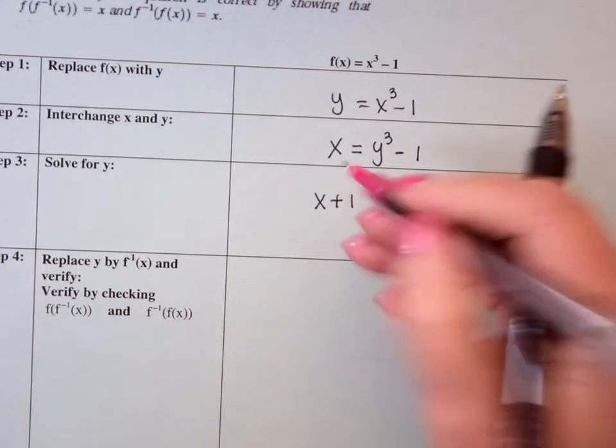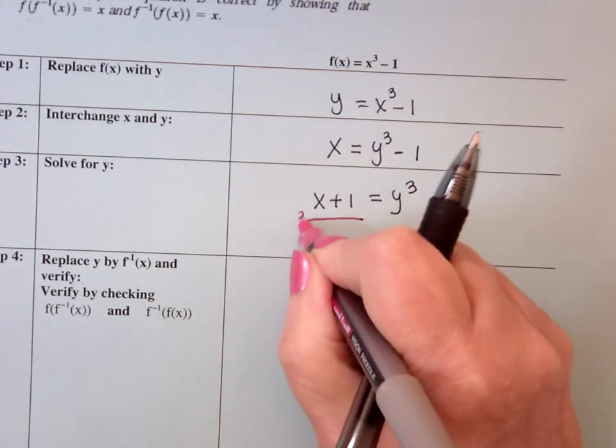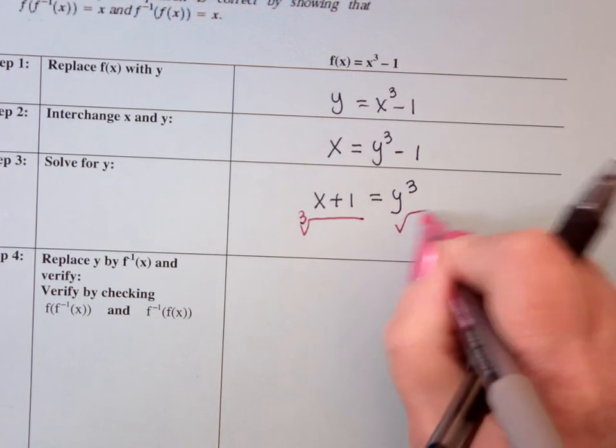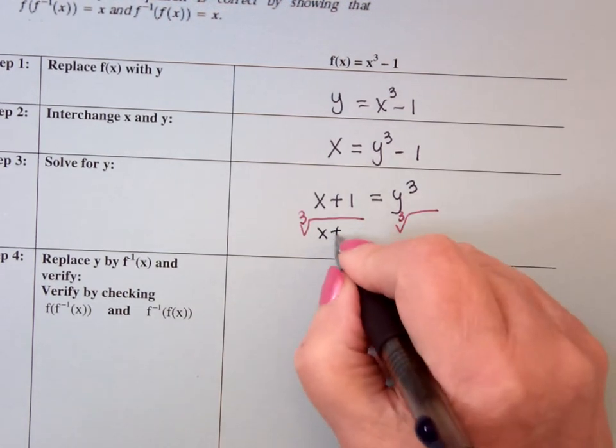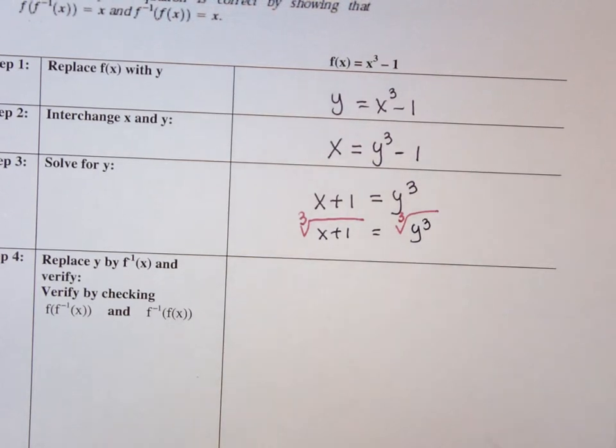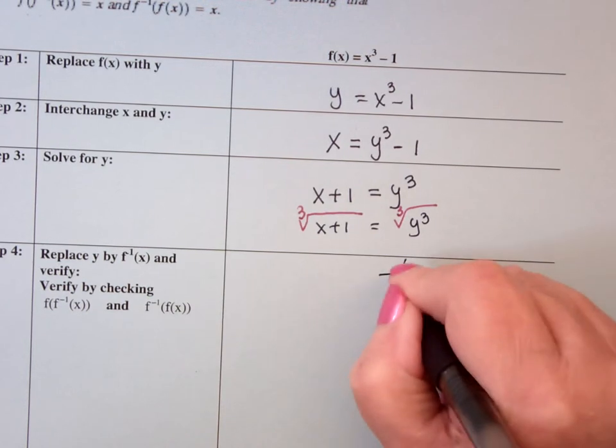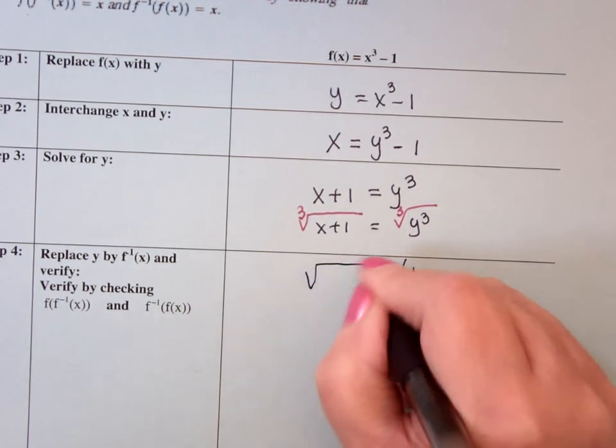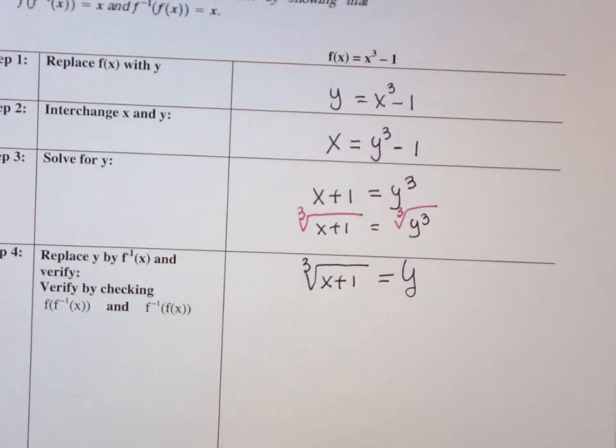Cube root both sides, so I'm going to have the cube root of the left hand side, the cube root of the right hand side. So cube root of x plus 1 equals the cube root of y cubed so that y equals the cube root of x plus 1. That should make sense because x cubed and cube root are inverses of each other.